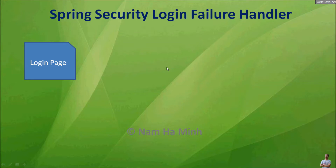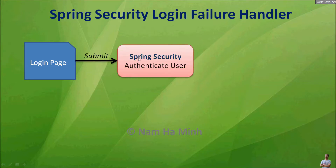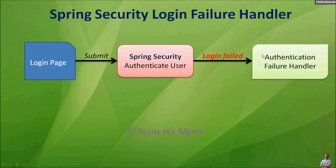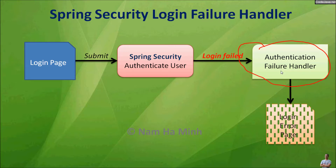Normally, when a user enters credentials in the login page and clicks the submit button, Spring Security will authenticate the user, and in case a login fails, the application will display the login error page. Spring Security allows programmers to intervene this process by adding an authentication failure handler here, and upon failed login, Spring Security will execute the code in this authentication failure handler.